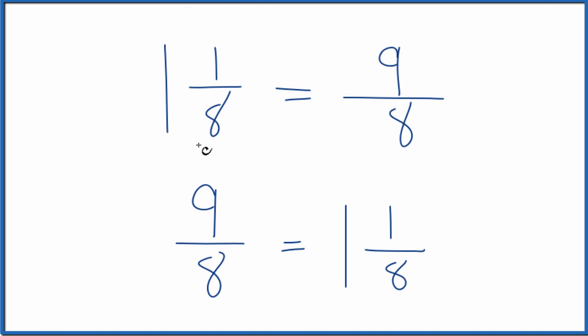This is Dr. B, writing the mixed number 1 and 1/8 as an improper fraction. It's 9/8, or you could call it 9 over 8. Thanks for watching.